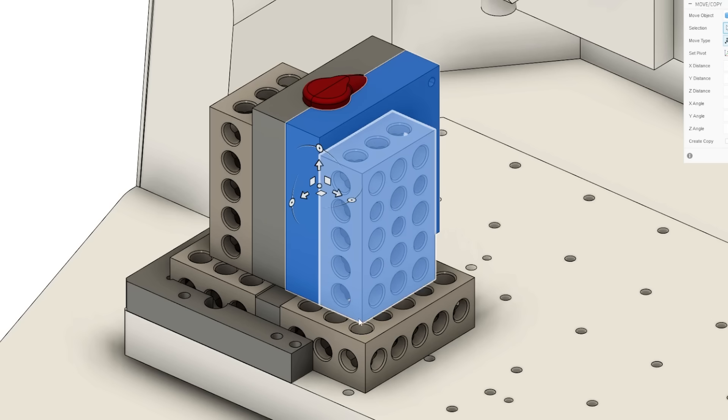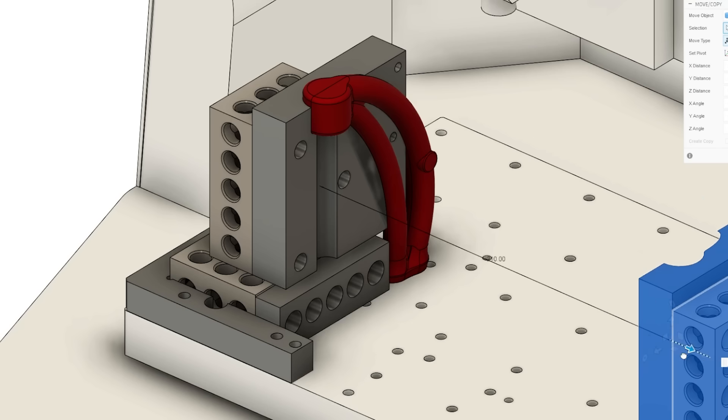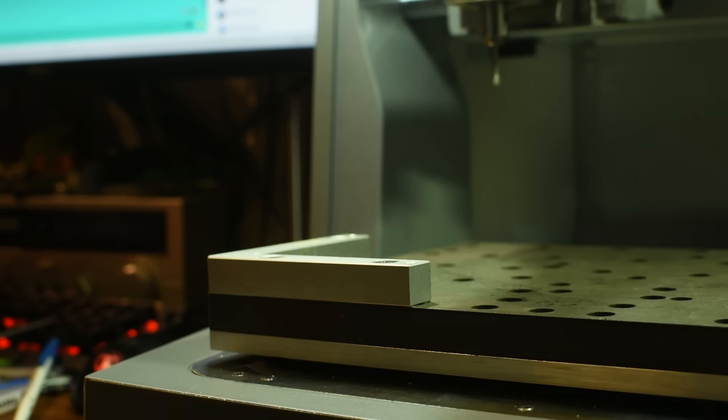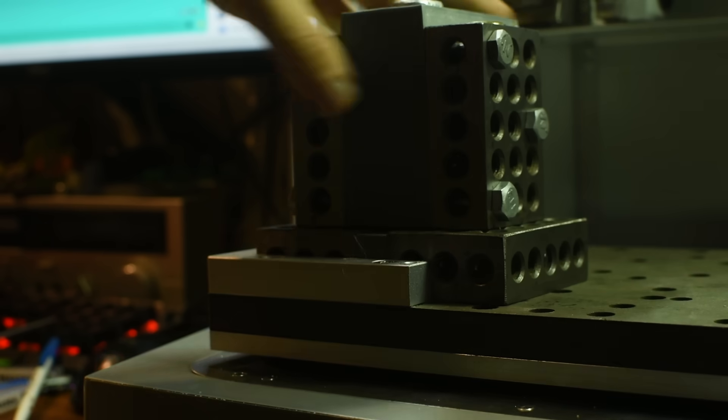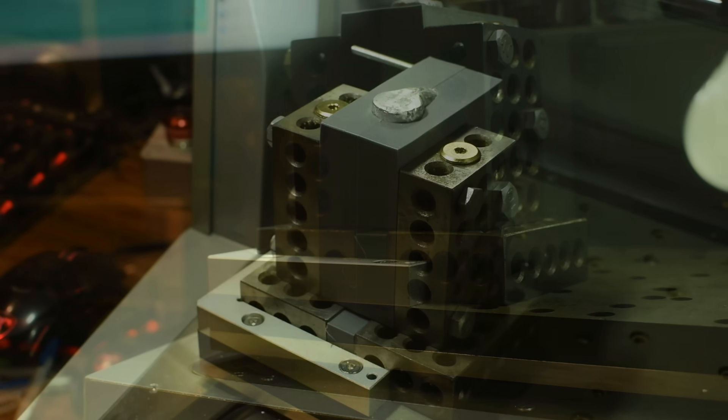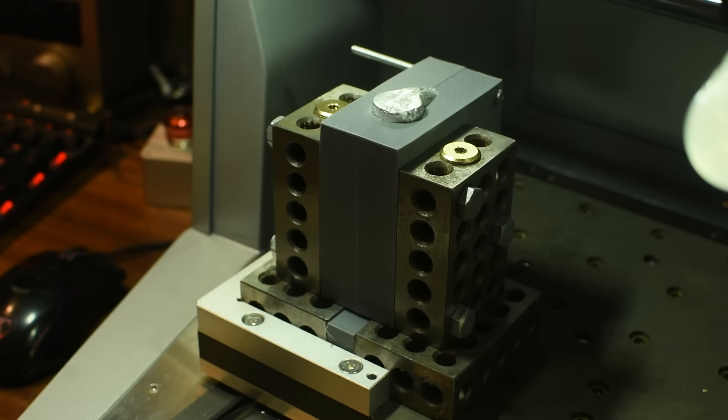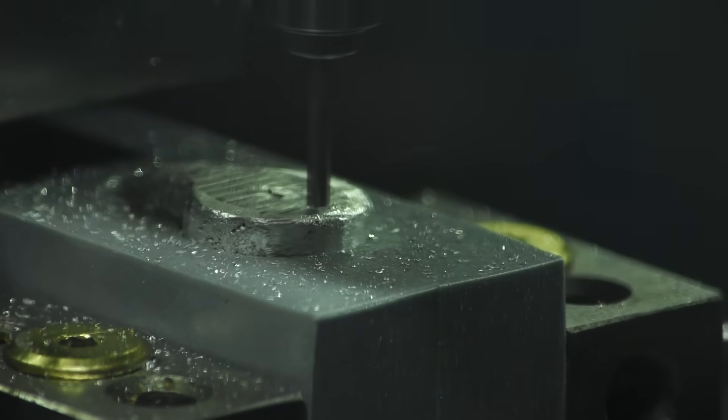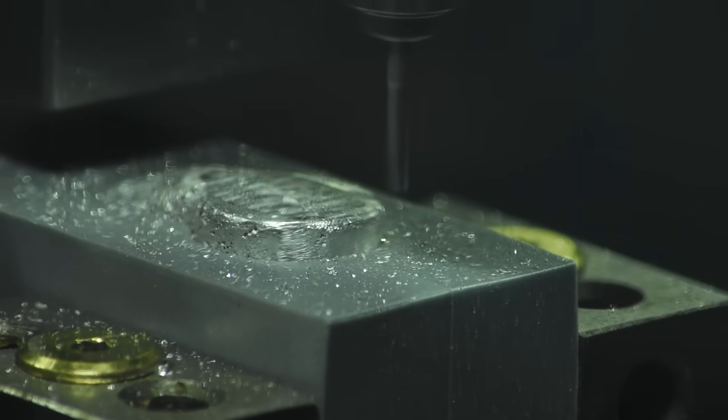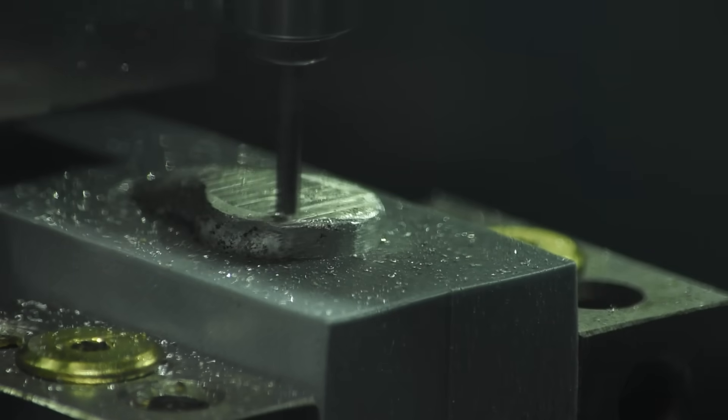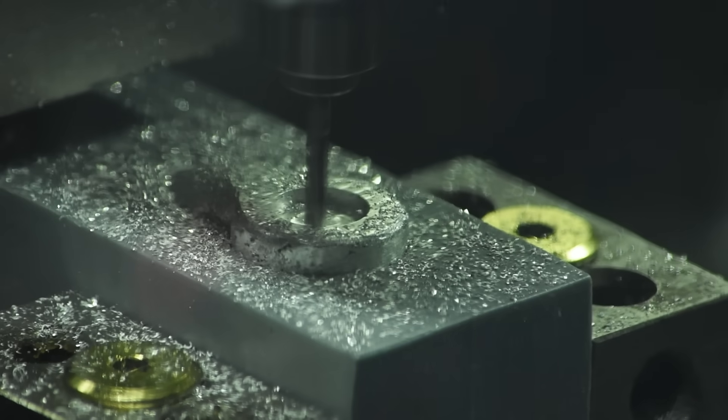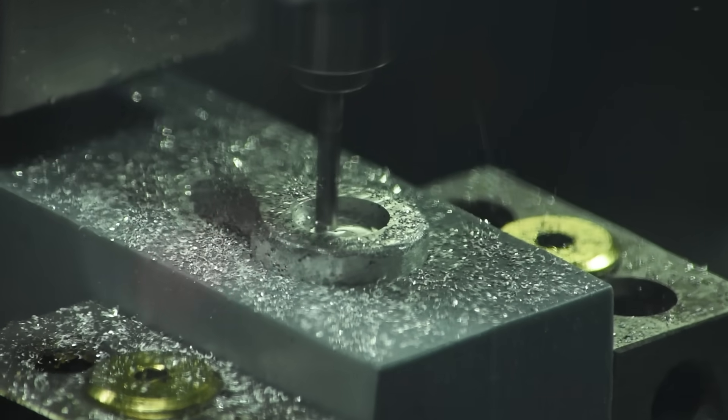The second part was significantly more complicated. Just coming up with a work holding solution took a bit of time, but I managed to make a design using 123 blocks and a printed guide, that I thought would hold the work securely enough. At this point, I realised another problem. I didn't have enough z-height for the end mill to make it through the work piece.